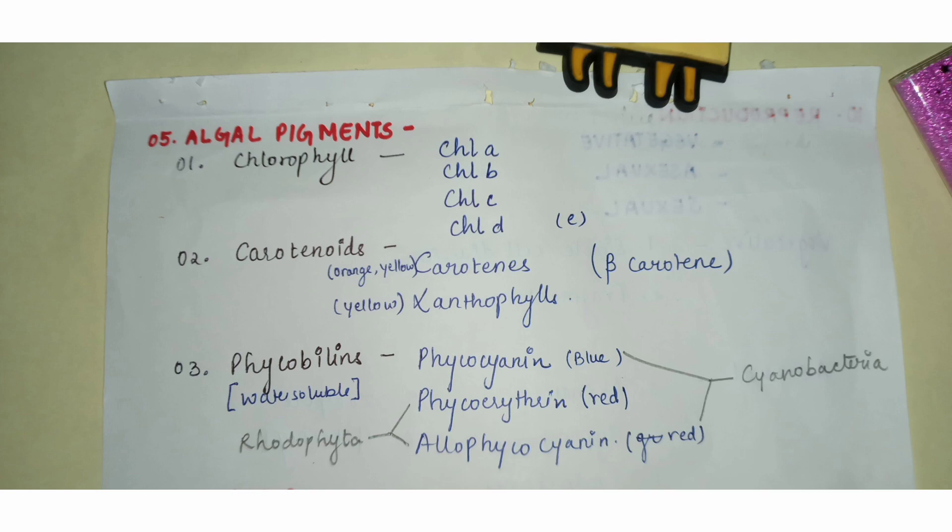Different kinds of algae show different colors of their thalli — we generally call them green algae, brown algae, red algae, etc. These colors are due to a combination of different pigments. Broadly, the first and most important pigment group is chlorophyll.